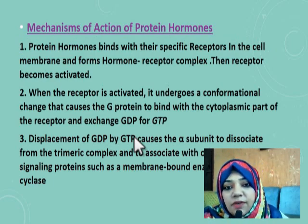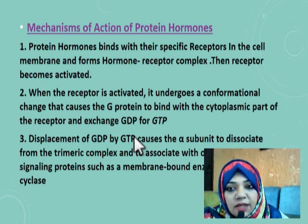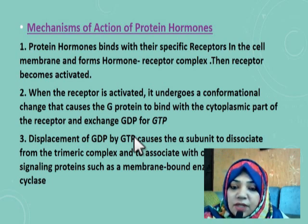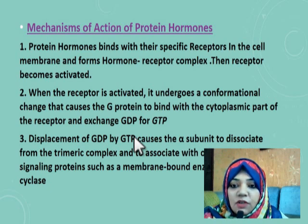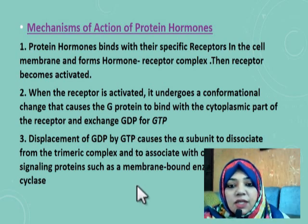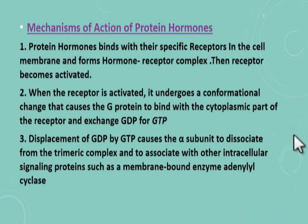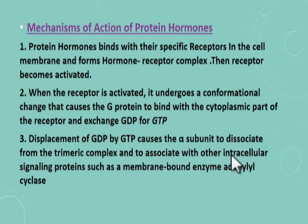Now let's look at the steps of mechanism of protein hormones. First, the protein hormone binds with its specific receptor in the cell membrane, forming a hormone-receptor complex, and the receptor becomes activated. When activated, the receptor undergoes a conformational change, causing the G protein to bind with the cytoplasmic part of the receptor and exchange GDP for GTP. Displacement of GDP by GTP causes the alpha subunit to dissociate from the trimeric complex and associate with intracellular signaling proteins such as the membrane-bound enzyme adenylyl cyclase.